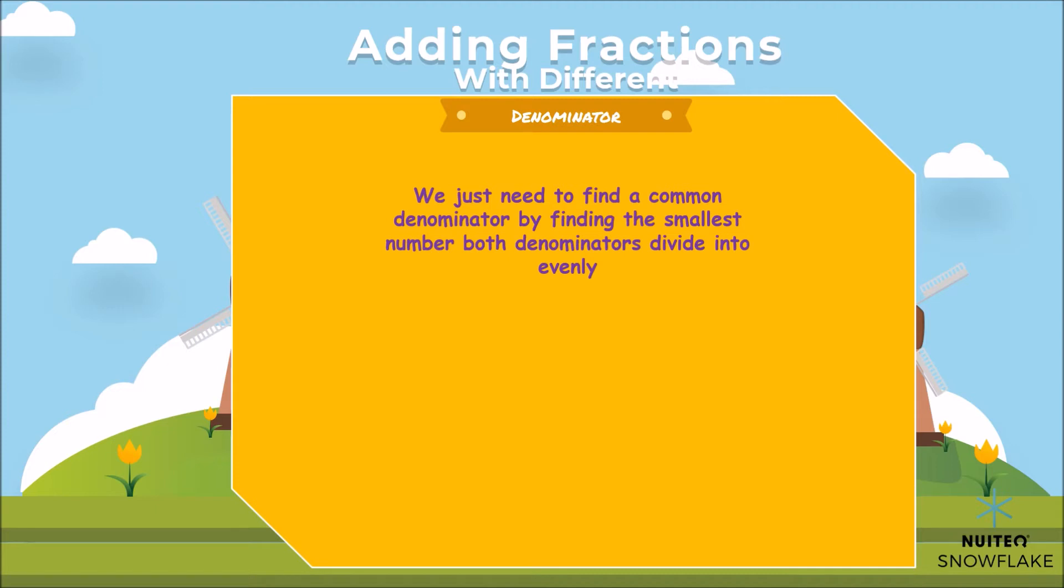Now when we have a denominator of 10 and 100 we do the same. Remember denominators 10 and 100 have a common denominator of 100. We simply multiply both the numerator and denominator by the number we need to multiply the denominator by to get the common denominator.